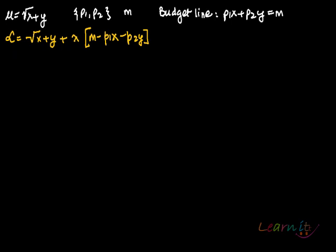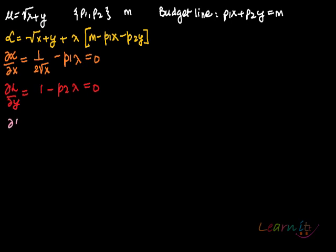How many partial derivatives will we find out? One each for variables and one for constraints. So three partial derivatives we are going to find out. What is del L by del x? That is one upon two root x minus P1 lambda equals zero. What is del L by del y? That is one minus P2 lambda equals zero. And what is del L by del lambda? Which is m minus P1x minus P2y equals zero.